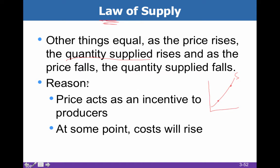The reason this happens is that price is an incentive to producers. As the price rises, that incentivizes them to sell more, because especially when all things are equal and costs are not yet rising, they're making a greater and greater amount of profit as the price goes up. Now clearly when costs start to rise, that's a whole different deal that we'll get to later on. Remember the law of supply — there's usually a question on either the law of supply or the law of demand.